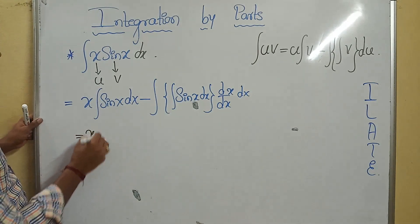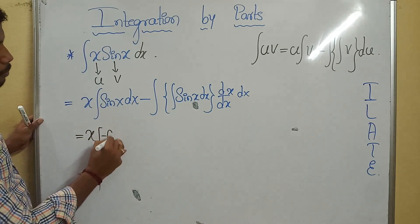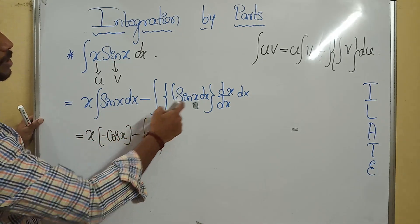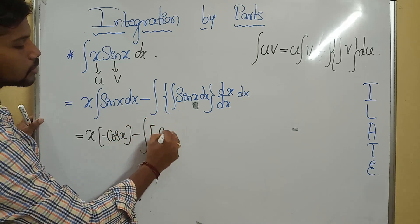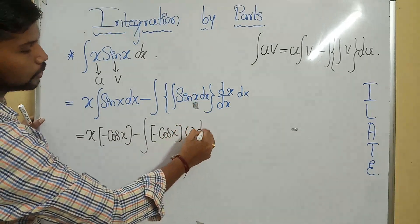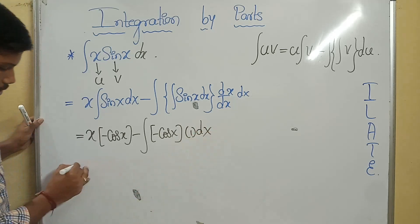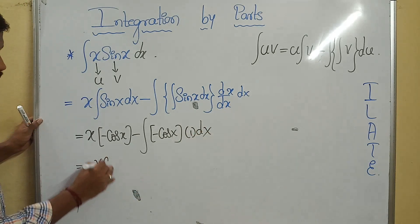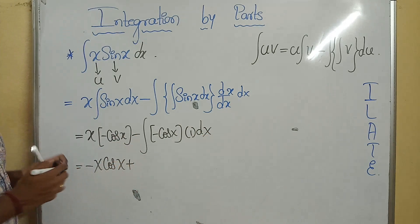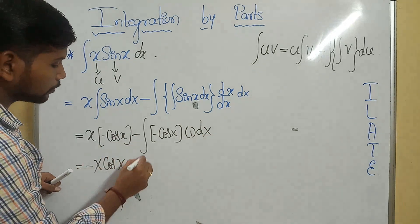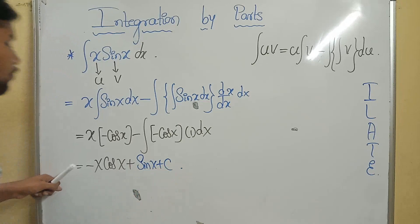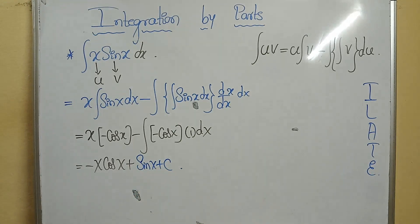Applying the formula: x as it is, integral of sin(x) is minus cos(x), minus integral of [minus cos(x)] times derivative of x, which is 1, dx. The answer will be minus x·cos(x) — minus into minus gives plus — integral of cos is sin(x), plus c. We got the required result.